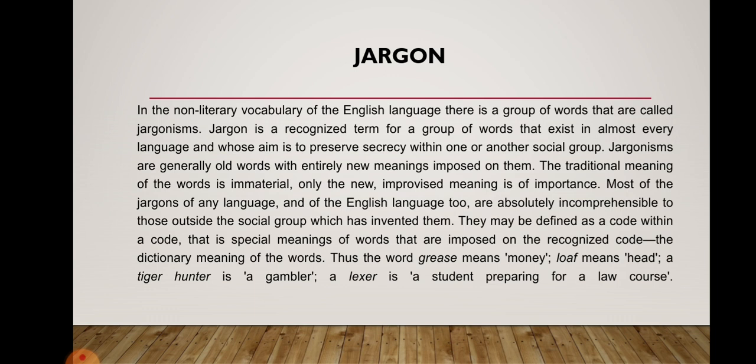The next group is jargon. In the non-literary vocabulary of the English language, there is a group of words called jargonisms. Jargon is a recognized term for a group of words whose aim is to preserve secrecy within one or another social group. Jargonisms are generally old words with entirely new meanings imposed on them; the traditional meaning of the words is immaterial. Most jargons are absolutely incomprehensible to those outside the social group which has invented them — they may be defined as a code within a code.